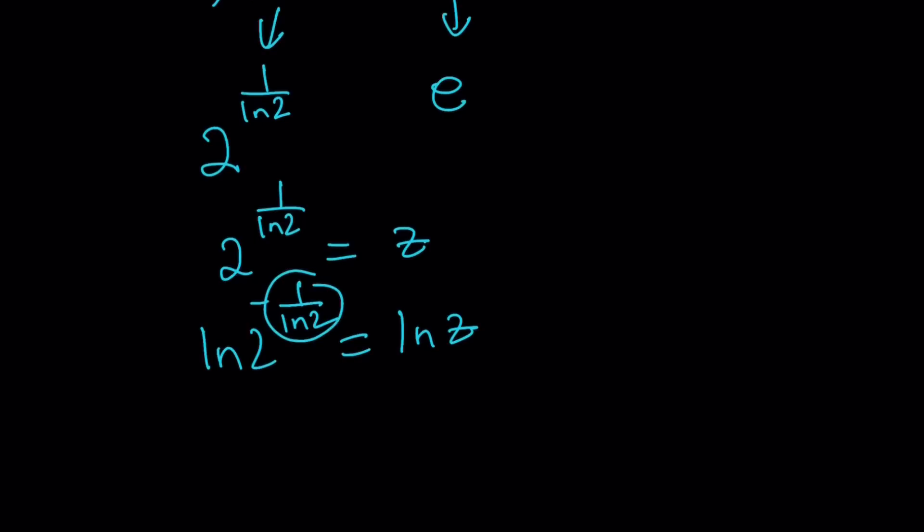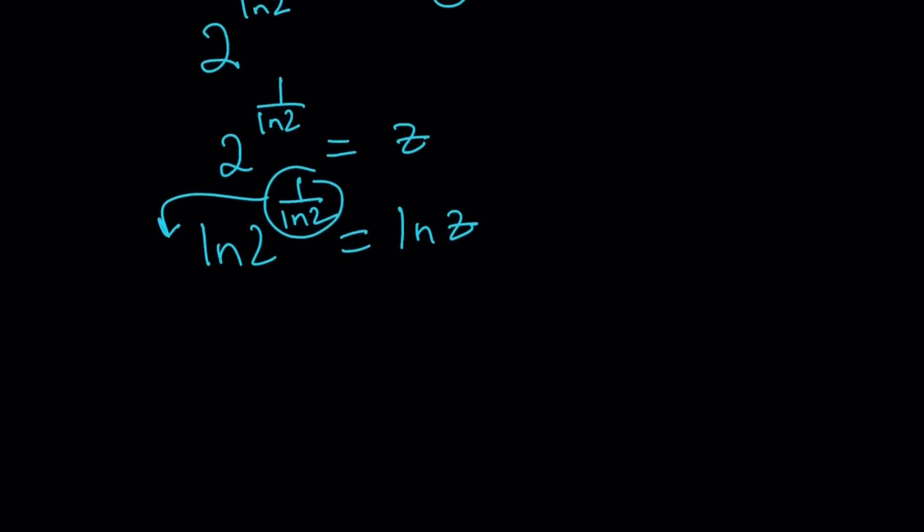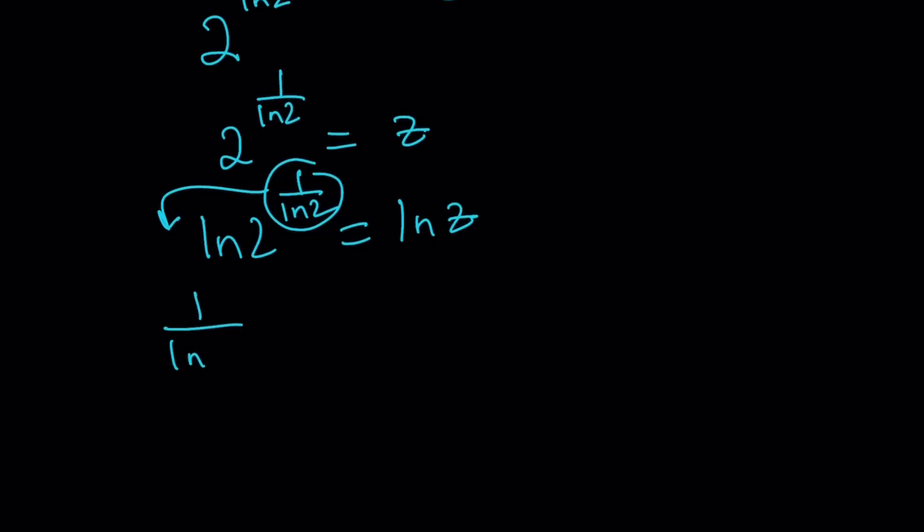And then you can move the 1 over ln 2, I mean. 1 over ln 2 times ln 2, which is 1, equals ln z. From here, we get ln z equals 1.